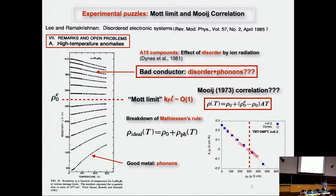This review article was written by Lee and Ramakrishnan around 1985, summarizing effects of weak disorder — weak localization, interaction corrections, all these quantum corrections. At the end they listed open problems they could not understand at that time. One of them, in section 7A, was 'high temperature anomalies,' the first item on the open problems list.